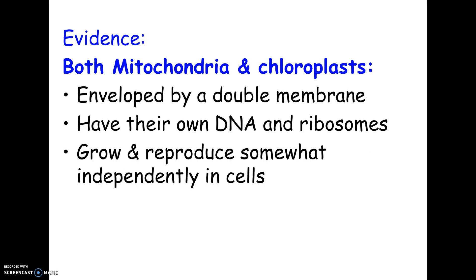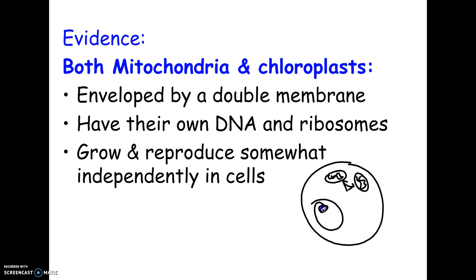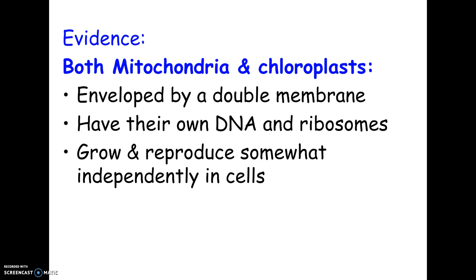The third piece of evidence is that mitochondria and chloroplasts reproduce and grow independently. The nucleus does not control the division of mitochondria and chloroplasts — they basically make their own decisions about when to divide. Since they divide on their own, not under the control of the nucleus, this is further evidence that they might be their own thing, or at least used to be their own thing that could have once lived independently. Please be aware of these pieces of evidence because you will be asked questions about them on tests and possibly on the AP exam.